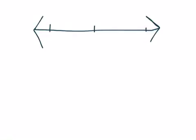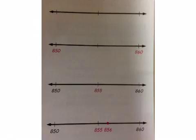Rounding using a number line is a great tool because it's a visual representation of what we're talking about. Let's take a look at the one that I already filled out and talk through how I did it. On the number line, if I'm rounding to the tens place, I'm trying to figure out which numbers in tens would be closest to the number I'm working with.